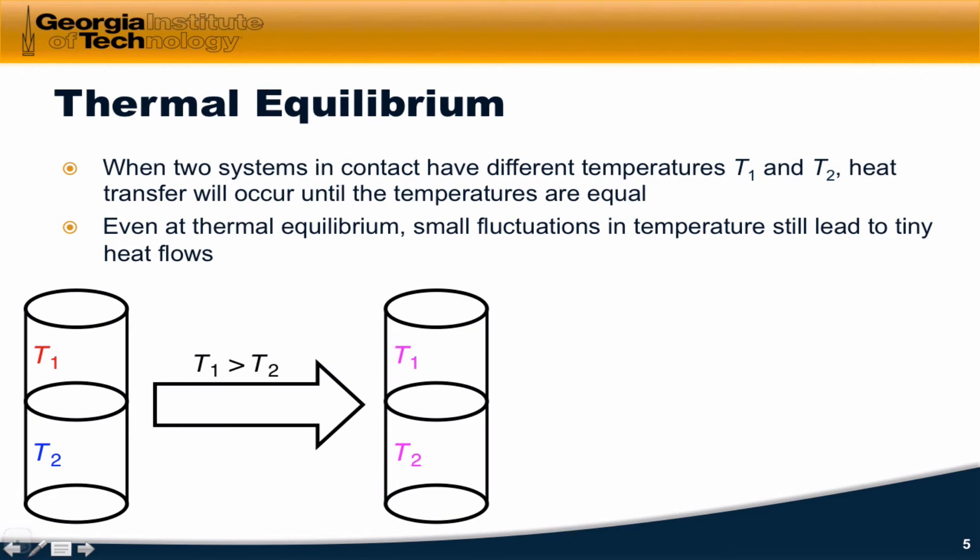If we start out with two bodies at two different temperatures and allow them to come into thermal contact such that heat can flow, then heat will flow from the hotter body to the colder body until a final state where, on the average, the two temperatures will be equal.